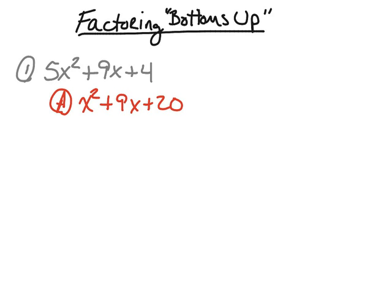So again, first step: rewrite the trinomial. Now that I have the trinomial rewritten, notice how I have a leading coefficient of 1, so I'm going to factor it as I did in the previous section. We know we're going to multiply two binomials. To get x², we need x times x. Now we're looking for factors of 20 that add up to 9 — those factors are 5 and 4. 5 times 4 is 20, and 5 plus 4 is 9. So my factors of x² + 9x + 20 are (x + 5) and (x + 4).